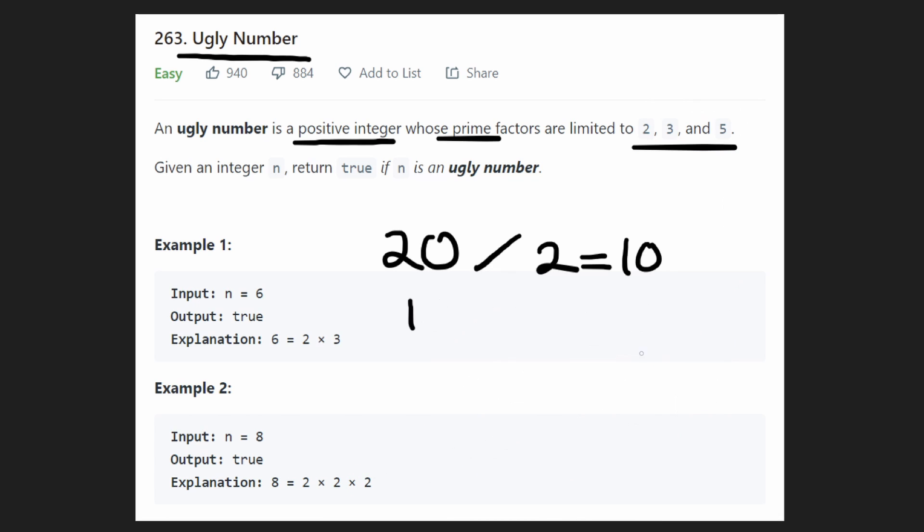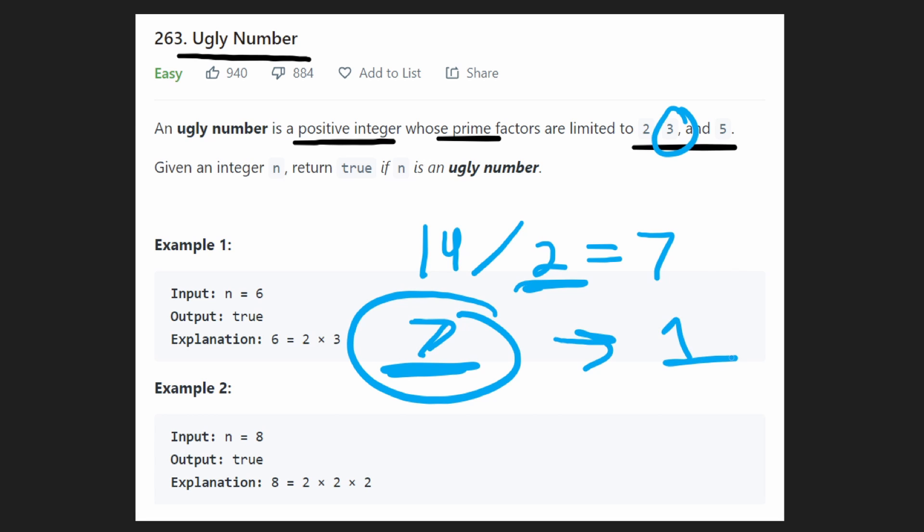Now, if we try doing the same thing with 14, which remember, we determined 14 is not an ugly number. If we try dividing 14 by 2, it works the first time, right? Then we get to 7, okay? Then if we try dividing 7 by 2, you know, we find 2 is not a prime factor of 7. We can try the same thing with 3, right? It won't work. We can try the same thing with 5. It won't work. So the most we were able to reduce this 7 was only down to a 7. We were not able to reduce it to a 1. That means that 7 has prime factors that are not within these three values. It has prime factors that are not 2, 3, or 5. And yeah, we know that's true because 7 is a prime factor itself. So, you know, in that case, we return false.